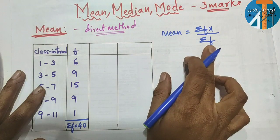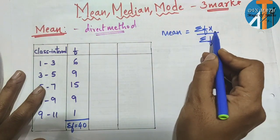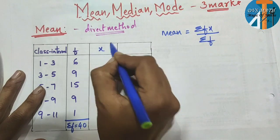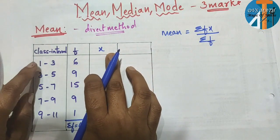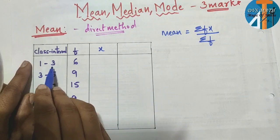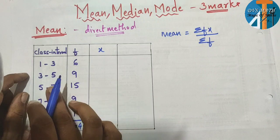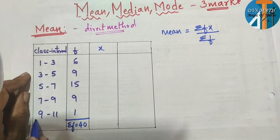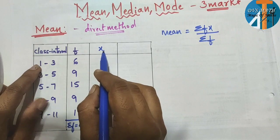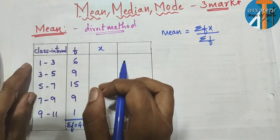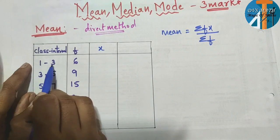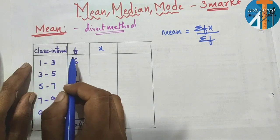Now we have to find σfx. f is there, but we have to find x. x is nothing but the mid value of the class interval. The class intervals are 1–3, 3–5, 5–7, 7–9, 9–11. x is the mid value — it is simple to find out. Just find the middle number of each class interval.